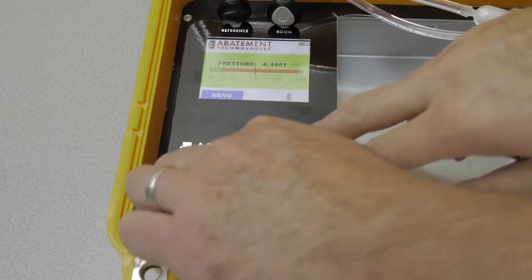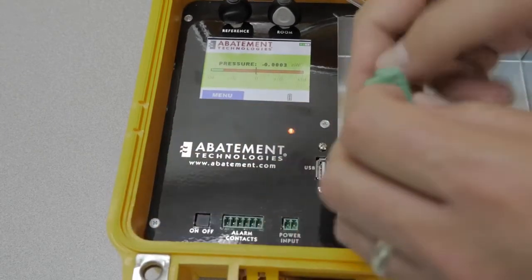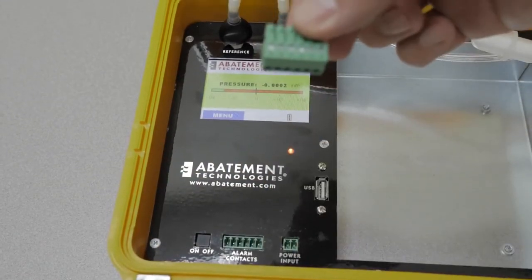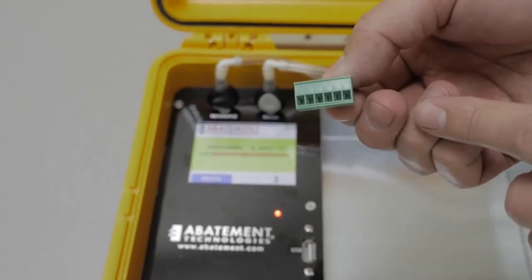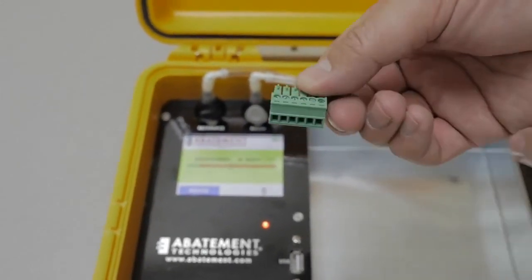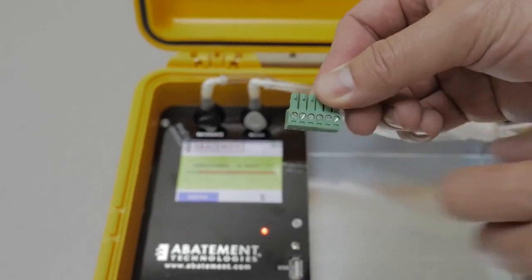The PPM3 comes equipped with alarm contacts. These are normally open, normally closed contacts that can work with an external device, such as our PM dialer, to provide remote alarm capabilities. For more information, refer to the instruction manual.